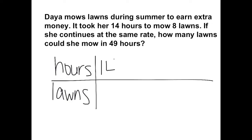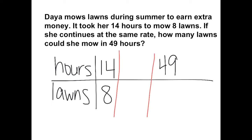It took her 14 hours to mow 8 lawns, and we want to know how many she can mow in 49 hours. Because there is no number I can multiply 14 by to get to 49, we stop at a number in between — 7, which 14 and 49 have in common. Going from 14 to 7 means dividing by 2, so we also divide the lawns by 2: 8 divided by 2 gives us 4.